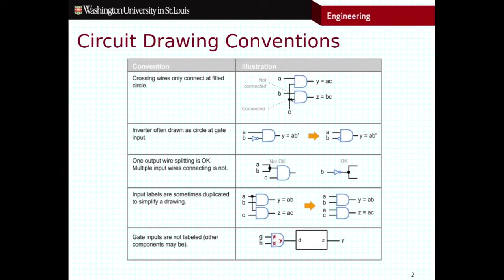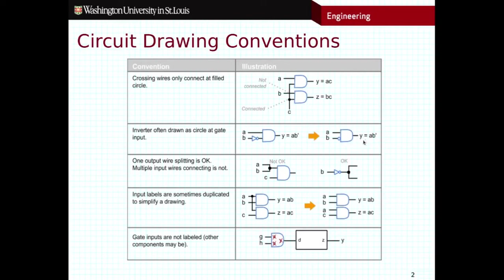Another thing to pay attention to is labeling your inputs. If you have inputs whose values are unknown — variables that could be either true or false — you should label them traditionally with letters starting at the beginning of the alphabet. Your outputs can also be labeled; here the output of this AND gate is labeled as an equation, which is good practice but not entirely necessary. Typically, outputs start towards the end of the alphabet — X, Y, and Z for outputs; A, B, C, D for inputs.